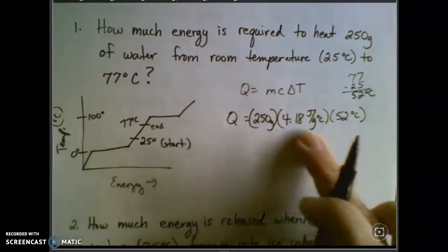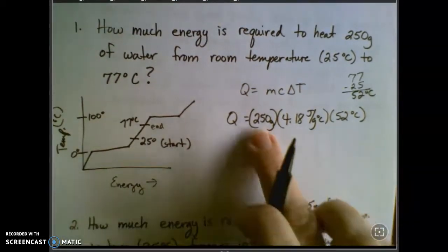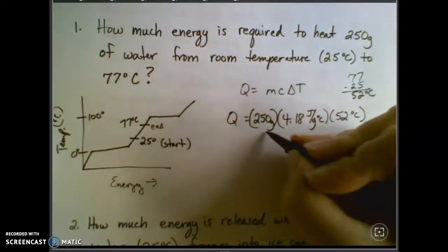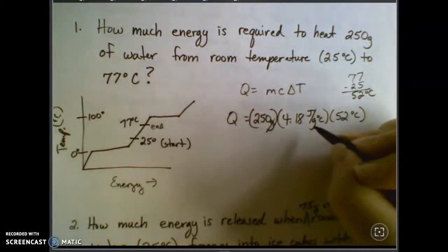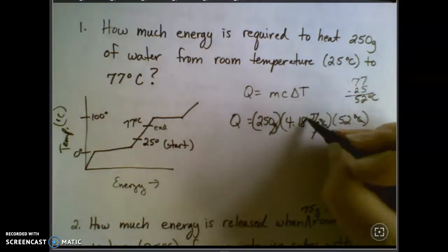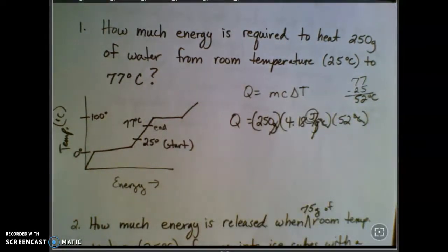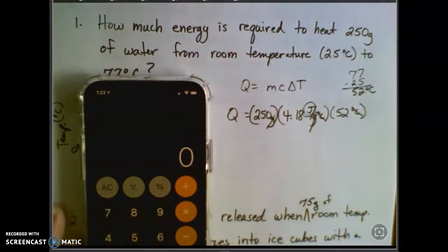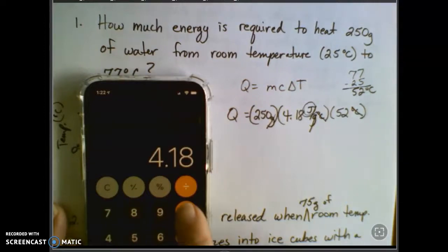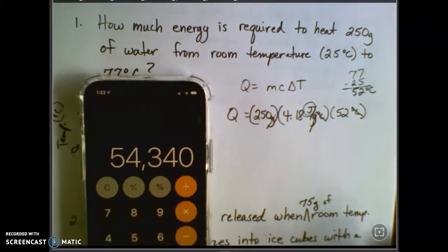So the energy is equal to the mass times the constant times the temperature change. Now, notice what else happens here. I'm big on units. The grams cancel the grams. The degrees Celsius cancel the degrees Celsius. And so I've got my final answer there in units of joules. And that tells me that I've got my problem set up right. So I'm just going to do my calculation. 250 times 4.18 times 52. And I get 54,340.